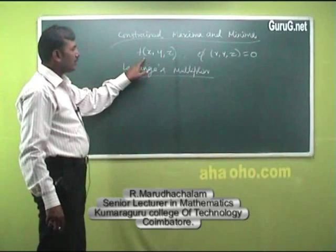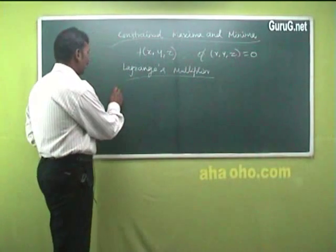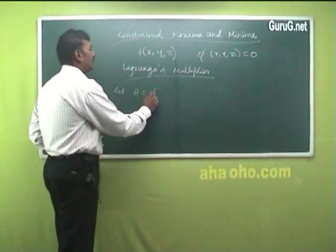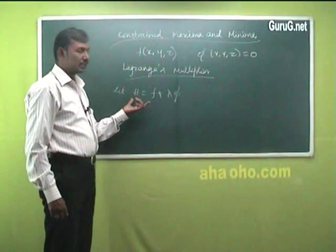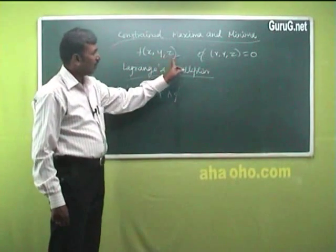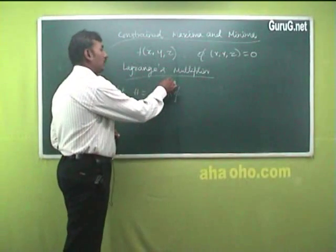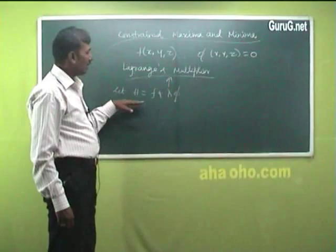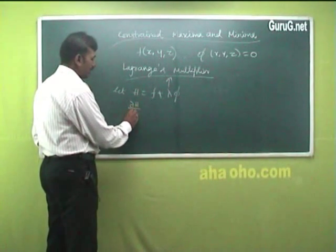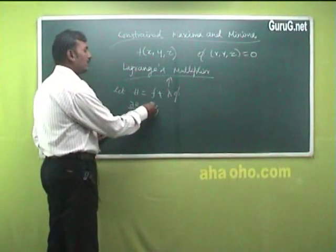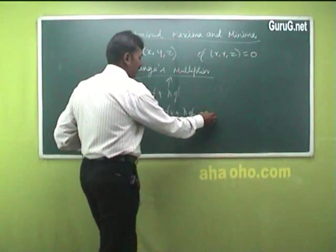Using Lagrange's multiplier method, the maximum or minimum value of the function can be found subject to this condition. You take h = f + λ·φ. You define a function h which is a combination of f and φ, where λ is an unknown multiplier called Lagrange's multiplier. The necessary condition for this function to be extremized is ∂h/∂x = 0, which gives f_x + λ·φ_x = 0. Take this as equation number 1.